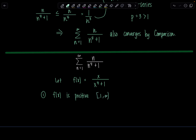So positive on the interval from 1 to infinity, which you can just observe — yes, we're good to go with that. The second condition: is f continuous on the interval from 1 to infinity? The domain of this function is actually all real numbers, since the denominator can never be zero. So f is continuous on all real numbers, and certainly on the subset from 1 to infinity.